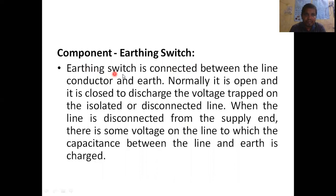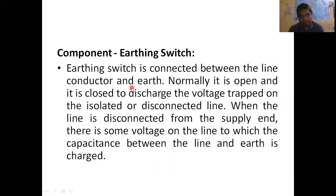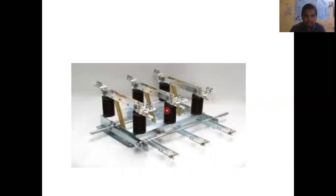Next, the earthing switch. The earthing switch is connected between the line conductor and the earth. Normally it is open, and it is closed to discharge the voltage trapped on an isolated or disconnected line. When you disconnect a line, there may be some trapped voltages that need to be discharged to earth, so you close the earthing switch to discharge to ground.